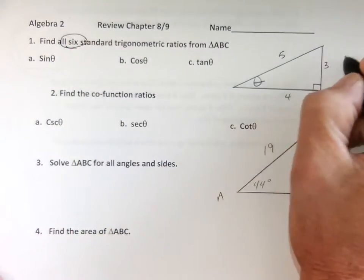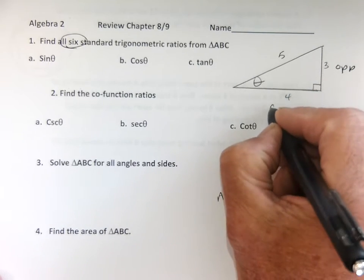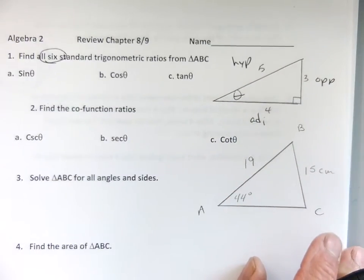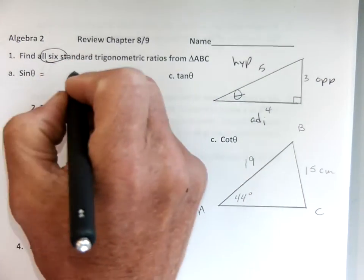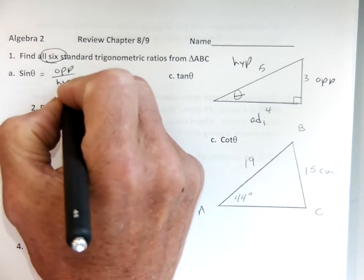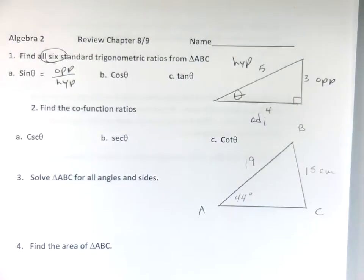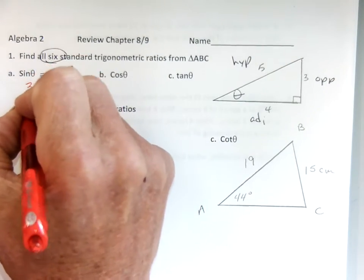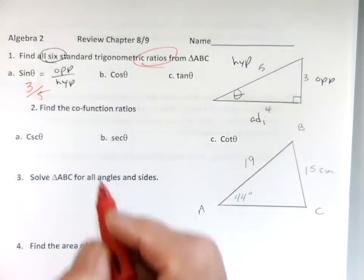We know sine. Here's theta, here's my opposite, my adjacent, and my hypotenuse. Sine is opposite over hypotenuse. Therefore my answer is 3 over 5. That's all you have to write, just the fraction, because we're looking for ratios. Done.